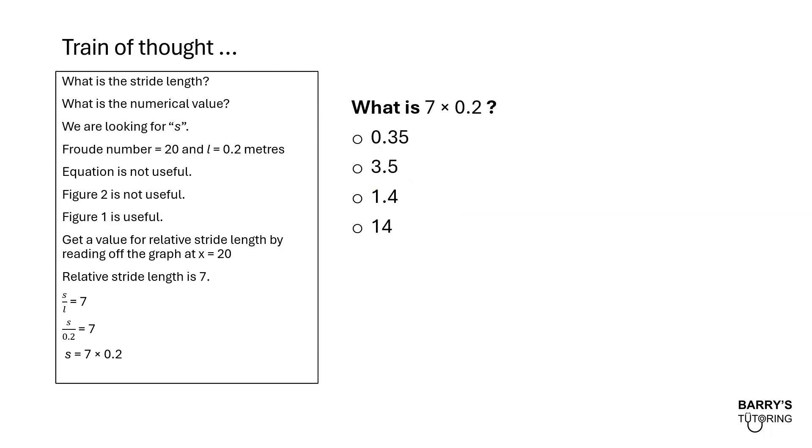What is 7 times 0.2? I've given a couple of options. It could be 0.35, 3.5, 1.4, or 14. What do you guys think? 7 times 0.2. I'm not going to go into the math, but it is 1.4. 7 times 0.2 is 1.4. And now we're very close. Going back to the answer options, which of the answer options is closest to our answer of 1.4? And it is B.